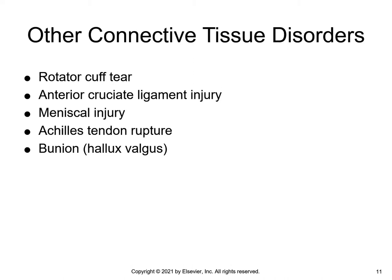A rotator cuff injury usually results from a repetitive activity, like throwing a ball, and it can result in a degenerative tear. Falls and traumas can also cause acute injury. The rotator cuff is composed of four muscles. The anterior cruciate ligament, or ACL, injury of the knee occurs during athletic activities, falls, or motor vehicle accidents.